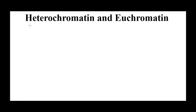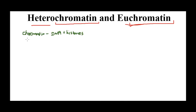As the term itself says, we are talking about forms of chromatin — these are two different forms of chromatin. Chromatin, if you remember from DNA packaging, is DNA wrapped around histone proteins. As chromatin undergoes condensation it forms the chromosome. So heterochromatin and euchromatin are simply two different levels of condensation of chromatin.